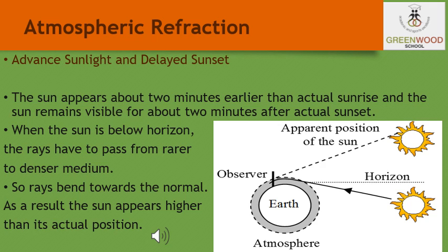Do you know that the sun is visible to us about 2 minutes before the actual sunrise and about 2 minutes after the actual sunset? This happens because of atmospheric refraction. By actual sunrise, we mean the actual crossing of the horizon by the sun. As you can see in the figure, it shows the actual and apparent positions of the sun with respect to the horizon. The time difference between the actual sunset and the apparent sunset is about 2 minutes.